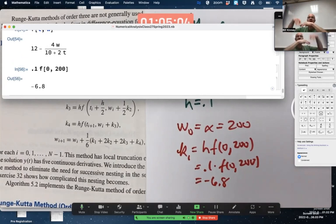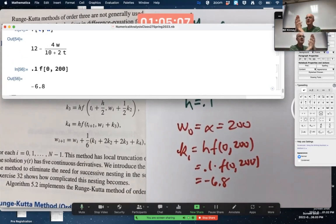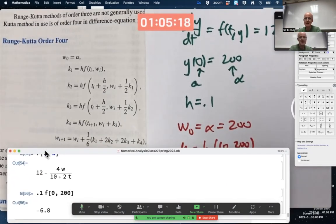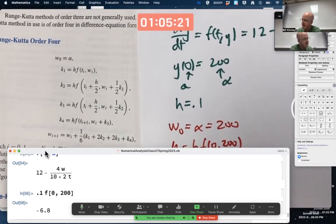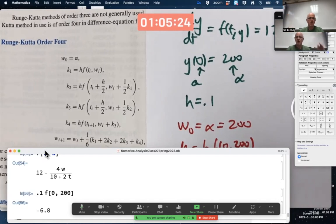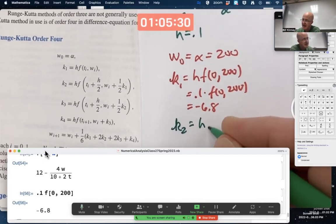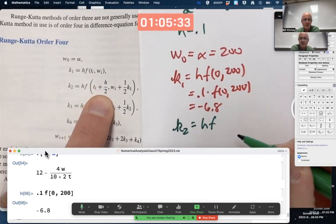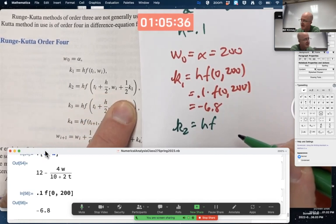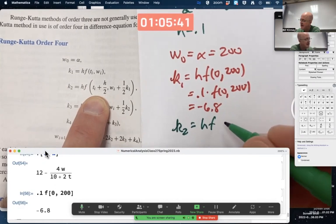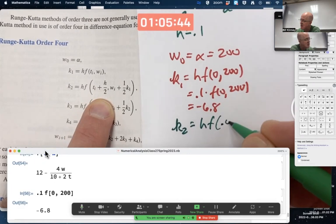That could be thought of as an approximation to the change in your solution as T increases from 0 to 0.1. But you can compute other approximations to the change in the solution. The next K2 is another approximation to the change in the value of the solution as T increases from 0 to 0.1. It's found by computing H times F of T_i plus H over 2 plus comma W_i plus 1/2 K1. So instead of evaluating at 0, we evaluate at 0.1 divided by 2, 0.05.